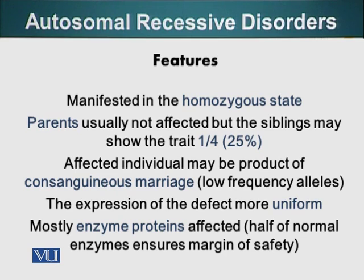Expression of the defect is more uniform. Autosomal recessive disorders don't have reduced penetrance or variable expressivity. Most of the time, autosomal recessive disorders result from mutation or change in enzyme proteins — genes coding for enzymes.